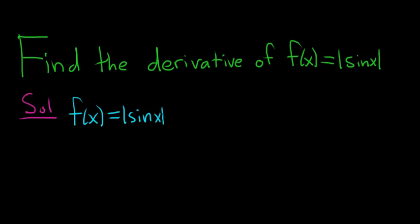So f of x equals the absolute value of sine x. And we're going to rewrite it using a really cool formula. If you have the absolute value of x, that's equal to the square root of x squared.